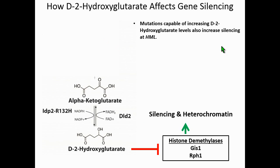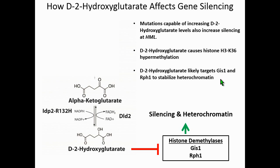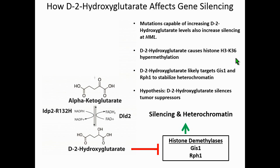To summarize: mutations capable of increasing D2-hydroxyglutarate levels in budding yeast increase silencing at HML. D2-hydroxyglutarate causes histone hypermethylation at H3K36 and H3K4, and the relevant inhibition increasing silencing is related to inhibition of demethylases that act on H3K36. From this, one hypothesis I'd love to further investigate in actual tumor cells is whether D2-hydroxyglutarate levels could have the same effect—causing an increase in silencing and potentially silencing tumor suppressor genes—which could be one mechanism driving tumor progression.